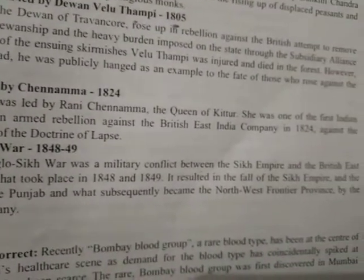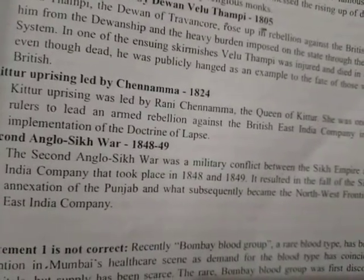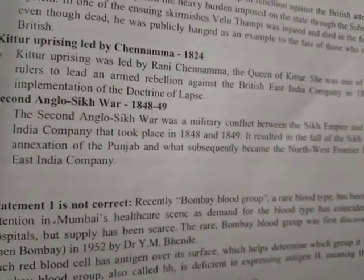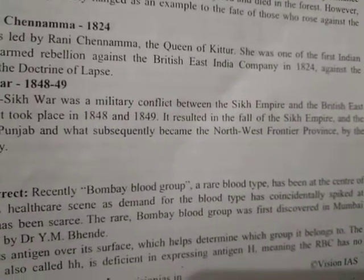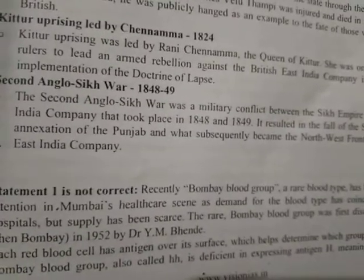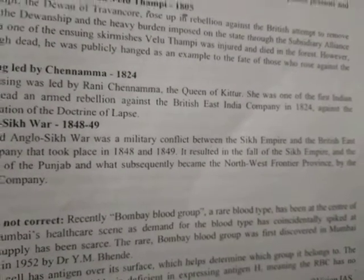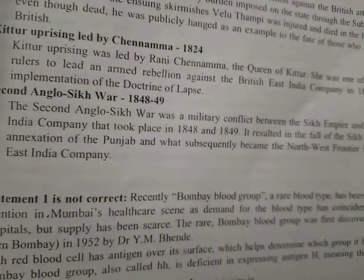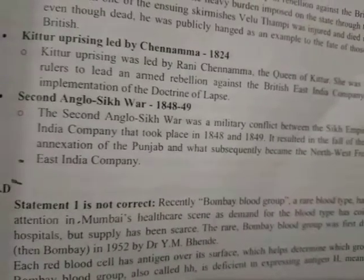The rebellion against the British East India Company took place in 1824, against the implementation of the Doctrine of Lapse. The Second Anglo-Sikh War was a military conflict between the Sikh Empire and the British East India Company that took place in 1848-1849. This led to the fall of the Sikh Empire and the annexation of Punjab by the East India Company.